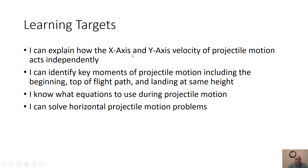The learning targets of this unit: we're going to look at X and Y axis motion and you'll be able to determine why they act independently. You're going to be able to identify key moments of a projectile path, including the beginning, the top of the path, and the landing at the same height. We're going to learn how to use equations during projectile motion to do some of the horizontal math, and then later on we'll look at the normal angular math.